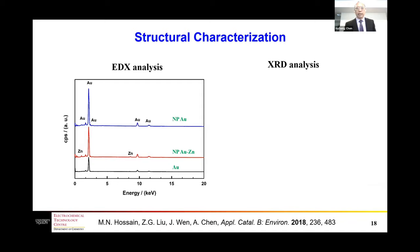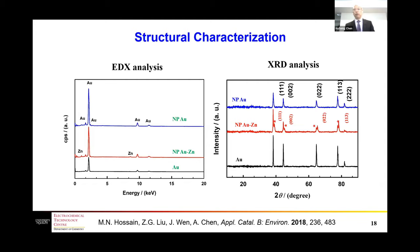We performed further characterization. The energy dispersive X-ray spectra confirm the gold, nanoporous gold-zinc, and nanoporous gold samples, with the zinc content calculated to be about 7% in the alloy sample. X-ray diffraction patterns also show extra peaks related to the nanoporous gold-zinc alloy compared to the smooth gold and nanoporous gold.